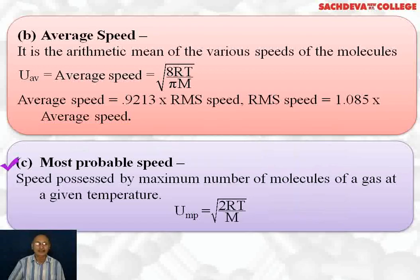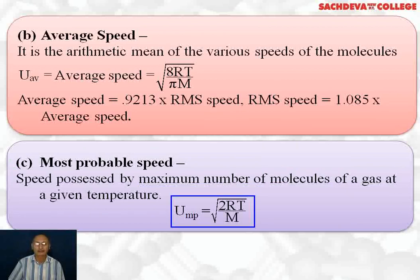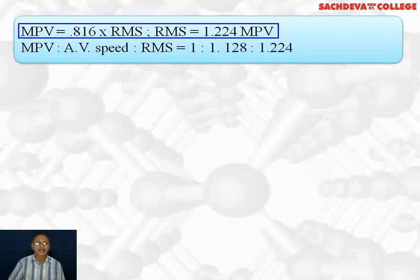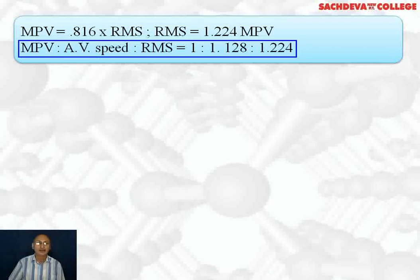The most probable velocity is the velocity possessed by the maximum number of molecules of the gas at a given temperature. U_mp = √(2RT/M). Most probable velocity equals 0.816 times RMS velocity, or RMS velocity equals 1.224 times most probable velocity. So the ratio of most probable velocity to average velocity to RMS velocity is 1 : 1.128 : 1.224.